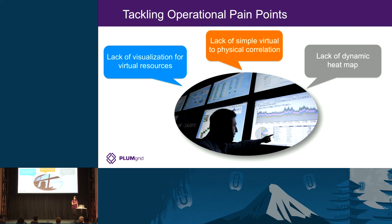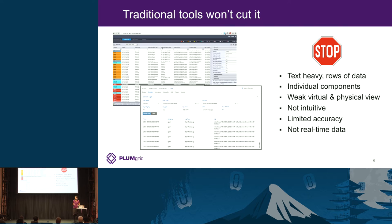Historically the network has been monitored with sampling and looking at historical data, but in this cloud environment we want to know when something is happening now. We looked at what tools others have built for the OpenStack environment, especially at the SDN and networking layer, and a lot of those tools have a very traditional look and feel — lots of tables, lots of rows, lots of data — making it really hard to spot a problem. A lot of the troubleshooting exercise is left to the user to figure out whether a given row means something is experiencing an issue.